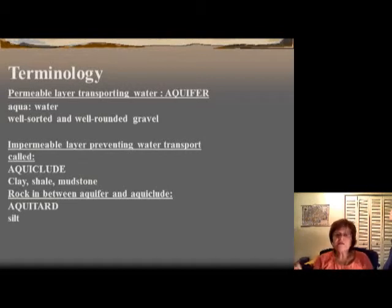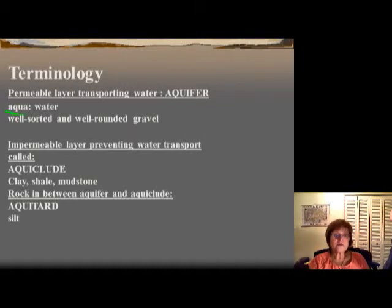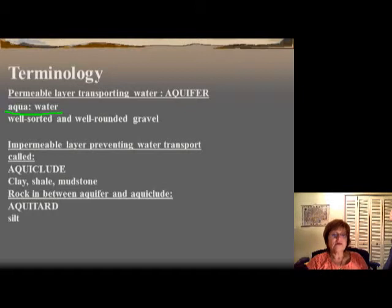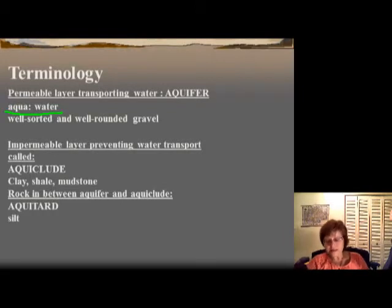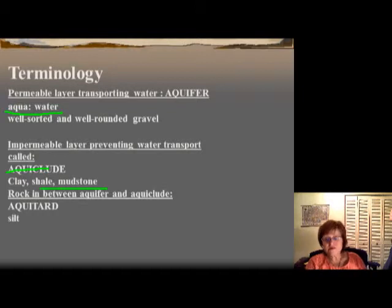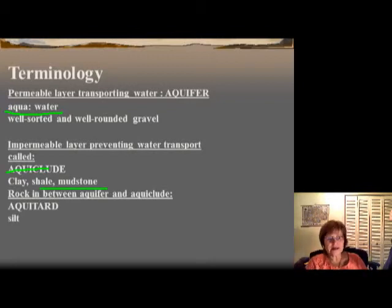Some more terminology: when you have a layer which is permeable and can transport fluid, we call it an aquifer. Aqua means water, so an aquifer is a layer which can transport and hold liquid. The best aquifer would be well-sorted, well-rounded pebbles or conglomerate. The opposite — when a layer cannot let water through at all — is called an aquiclude, which is clay or mudstone. Rocks in between, with some porosity and limited permeability, are called an aquitard — silt is a typical aquitard.